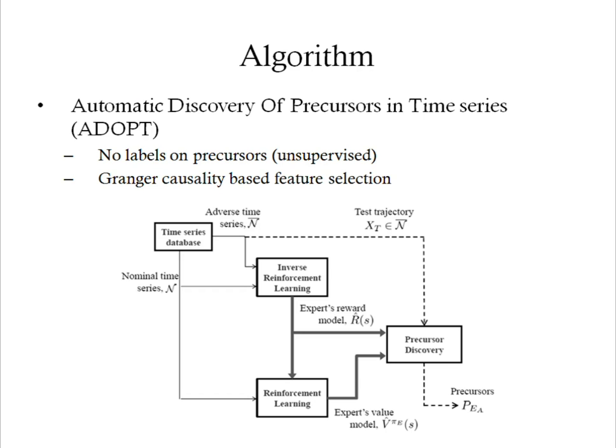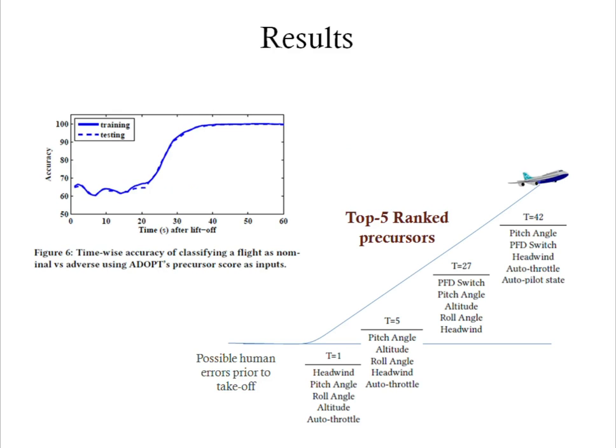We apply a recently developed algorithm called ADOPT to detect precursors to the drop in airspeed. ADOPT involves building an expert model using reinforcement learning and using the expert model to check if a time series event is a precursor or not. Our method achieves about 60 to 95 percent accuracy in predicting the drop in airspeed at various points during the flight. Some of the precursors that we found include a bad headwind, improper management of pitch, and possible human errors in setting speed reference.